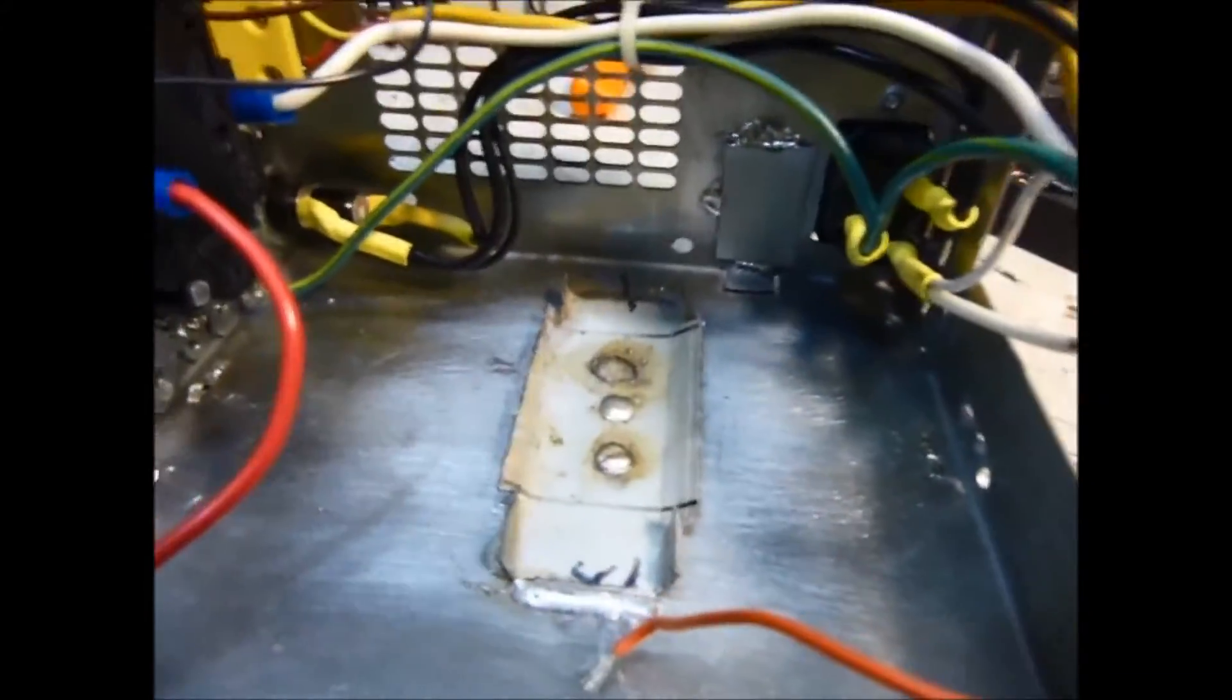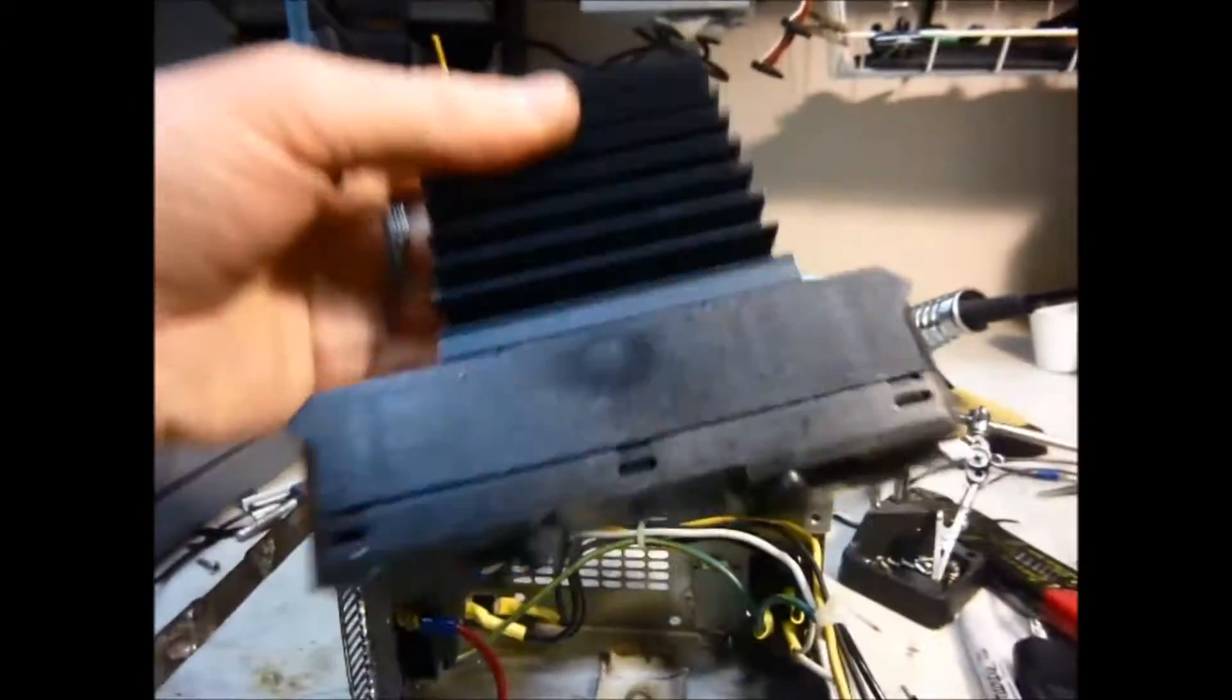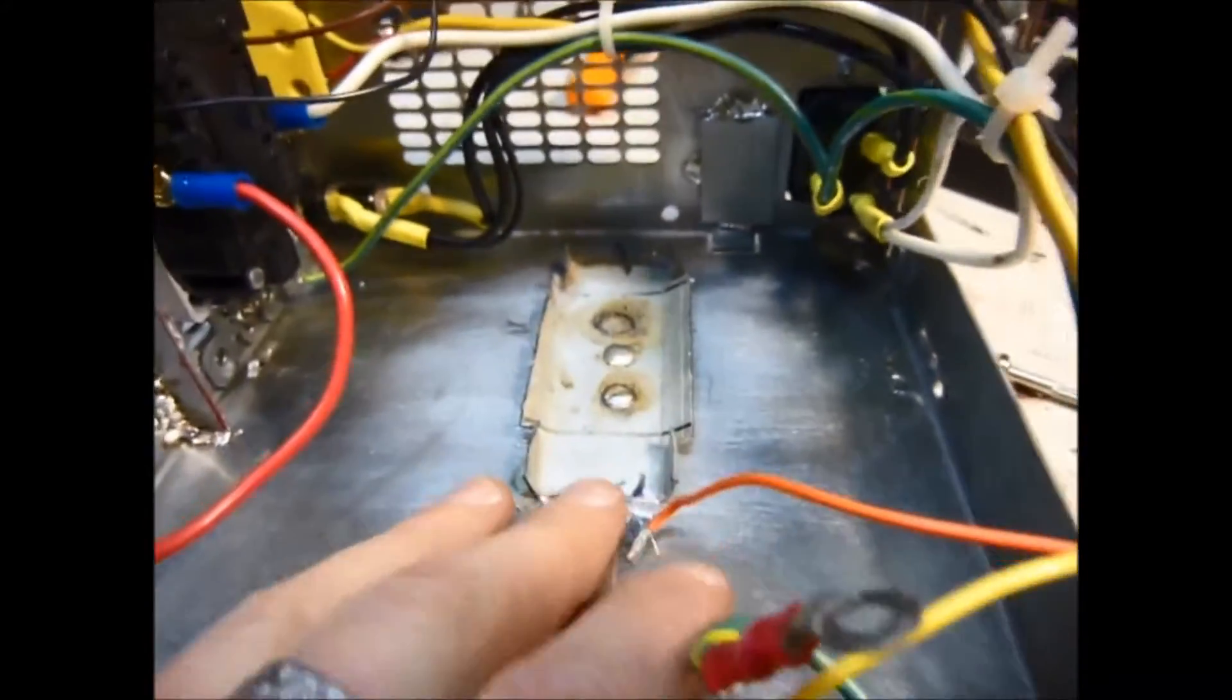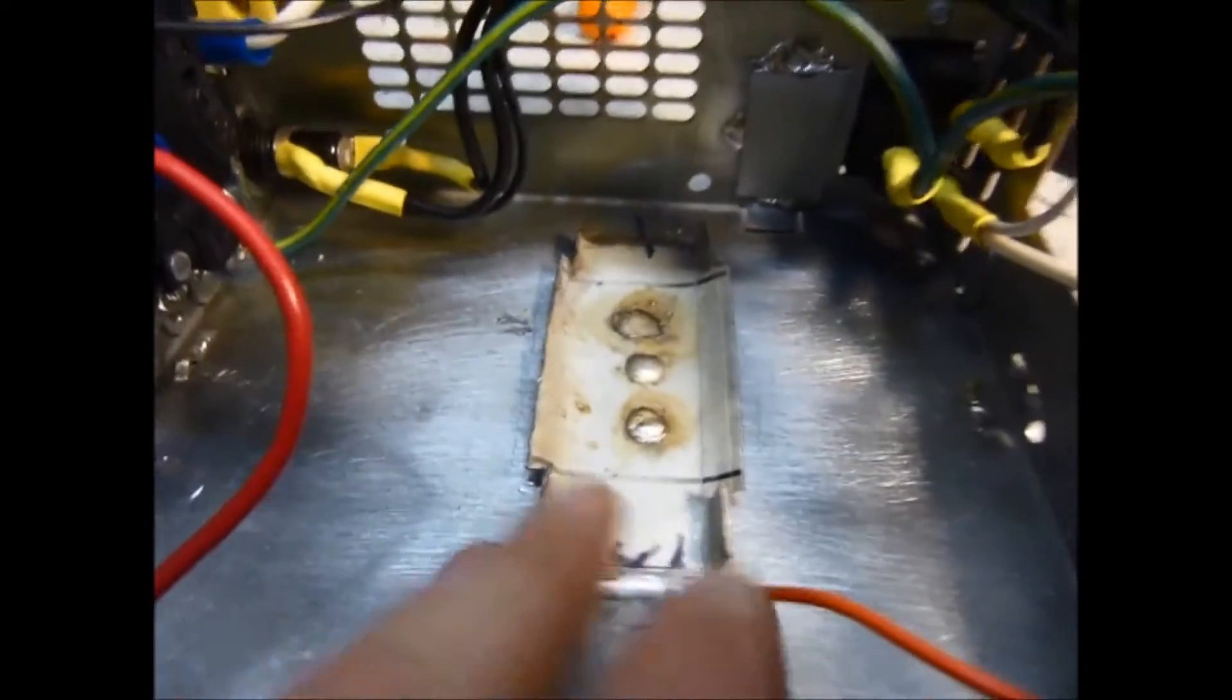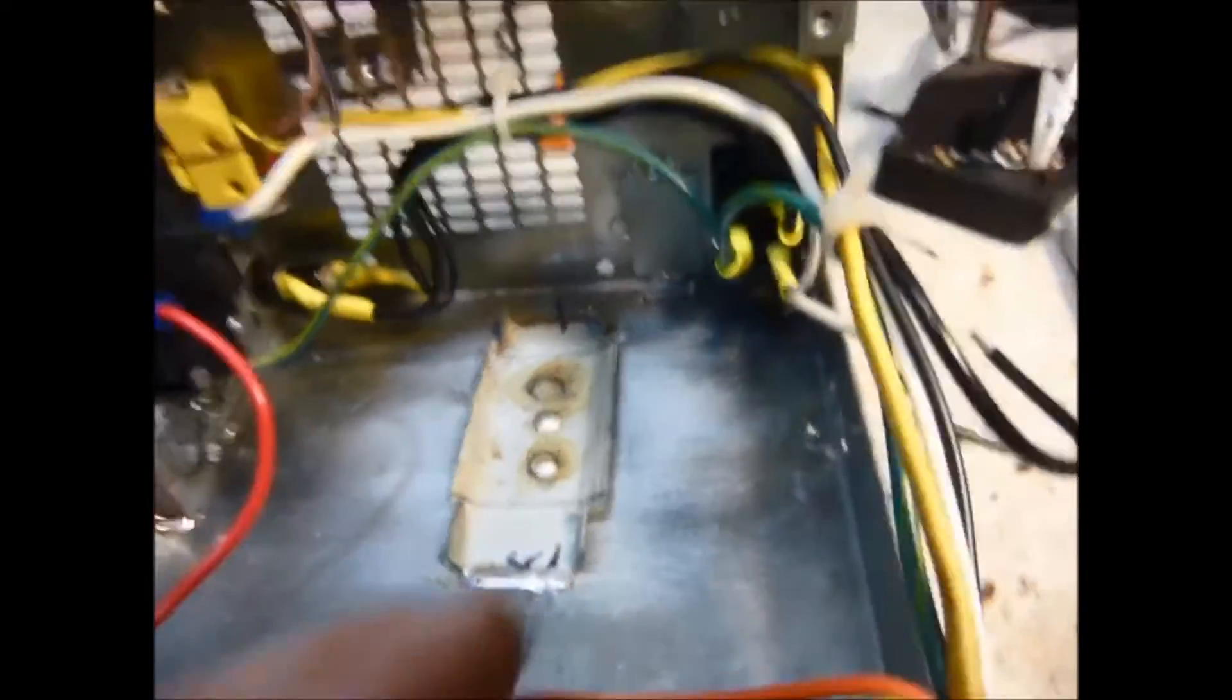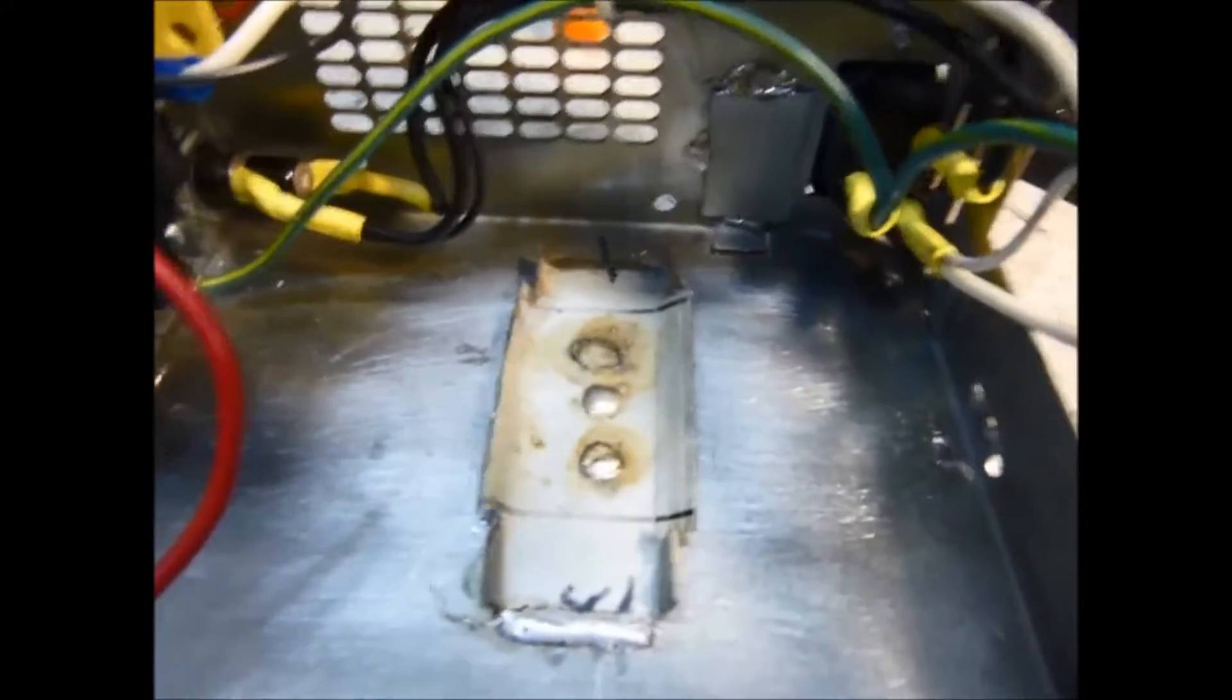Here's the little rail mount that I made for the solid-state relay or solid-state contactor. It's pretty sturdy. I used the blowtorch to solder that down because I just couldn't heat it up with a normal soldering iron. It works pretty good.